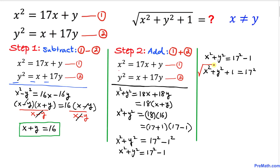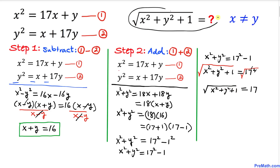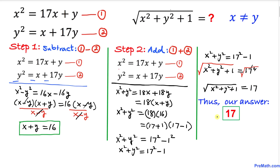Taking the square root of both sides, the square and square root on the right cancel, leaving 17. On the left we get √(x² + y² + 1). That's exactly what we were looking for, so the answer is 17. Thanks for watching, and please don't forget to subscribe to my channel for more exciting videos!